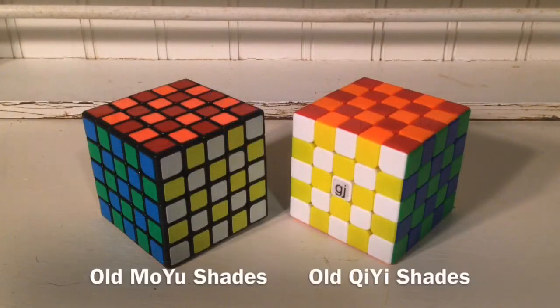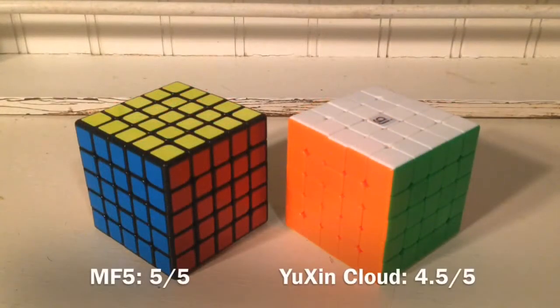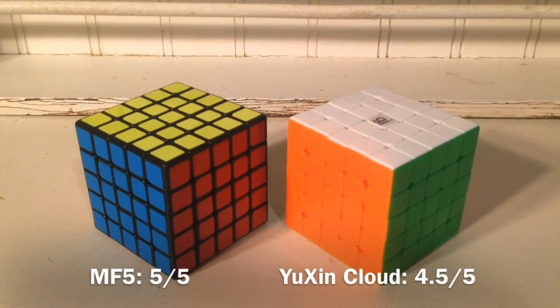Both of these cubes come in their old shades, respective to their brand. In this category, I'd give the MF5 a 5 out of 5, and the YuXin Cloud a 4.5 out of 5.